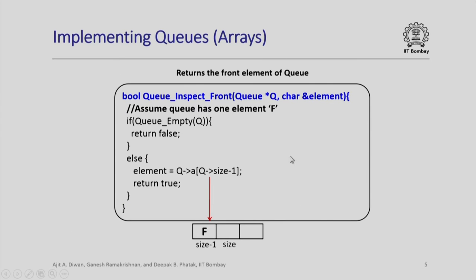Next comes the returning of the front element. I want to examine what is the front element, to inspect the front element. Assume that queue has only one element F. It will look like this: size value will be pointing to actually the next element of the array. The 0th element will contain F which already exists as one element. Clearly this is the front of the queue as well.